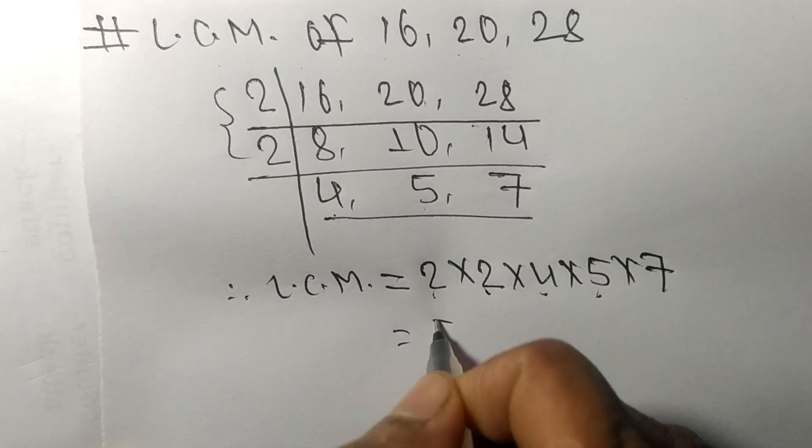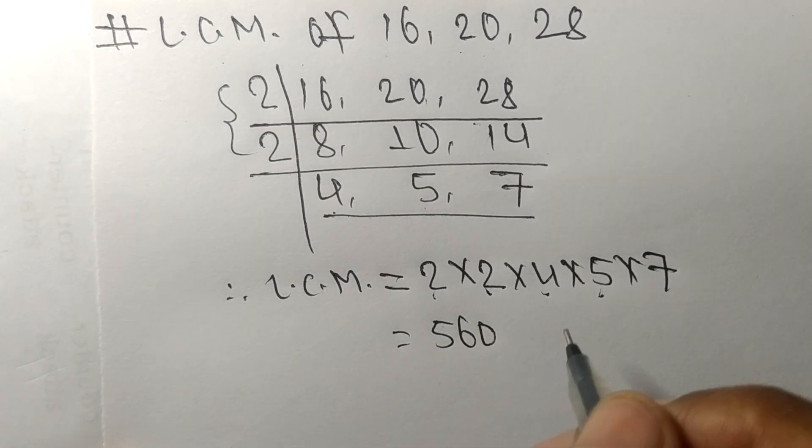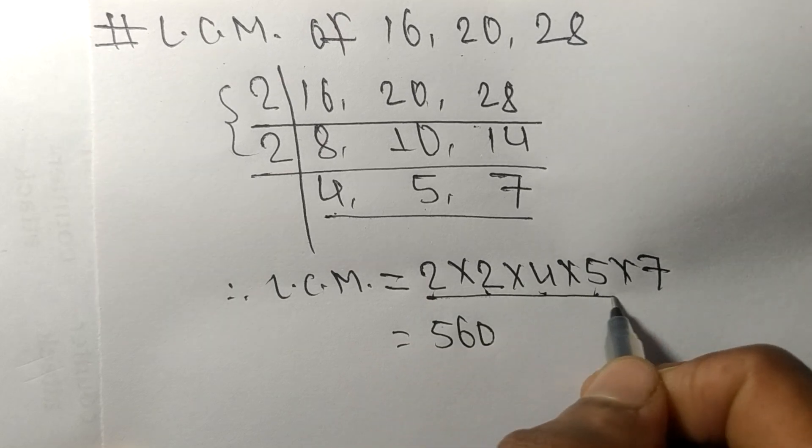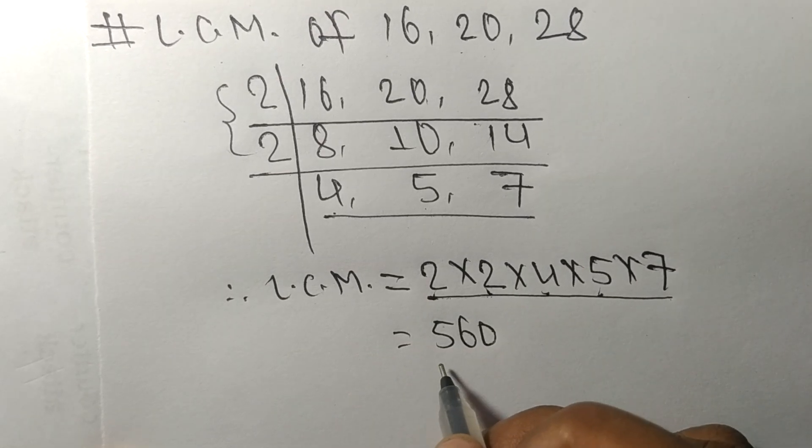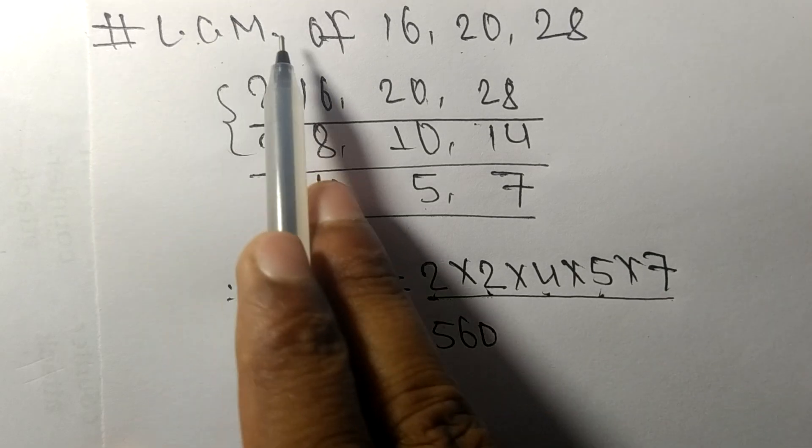80 times 5 mean 560. So by multiplying all these numbers we got 560, so 560 is the LCM of 16, 20, and 28.